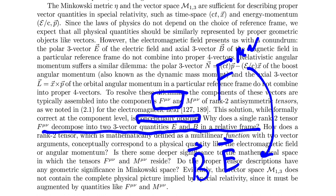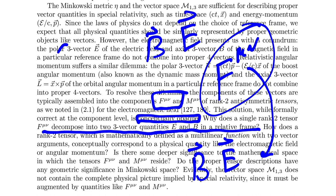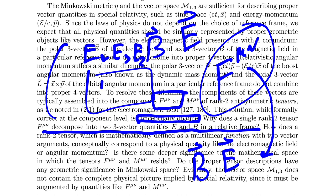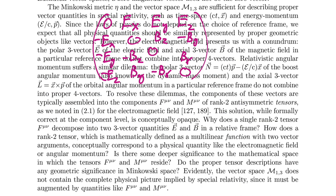We sort of understand how the decomposition is done. When you get this object and put it in a particular frame, you can read off the B field and the E field. You had E_x, E_y, E_z, then a section with B, and then −E_x, −E_y. You can read off the components of the magnetic field out of the bulk of the matrix, and the components of the electric field off these columns. Once you transform into the right frame, you can read off these three-vectors.